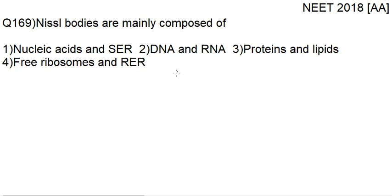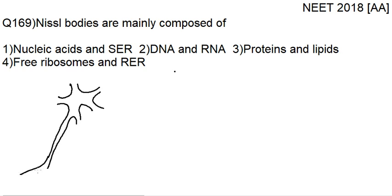What are missile bodies and where are missile bodies present? This diagram is of a neuron — the functional unit of the nervous system.